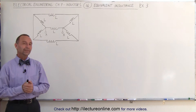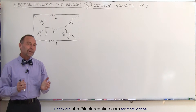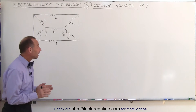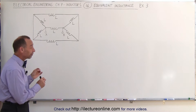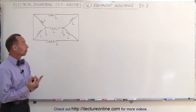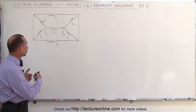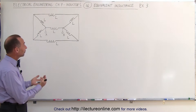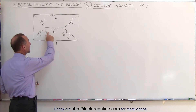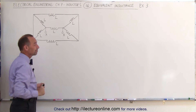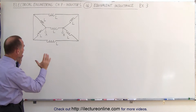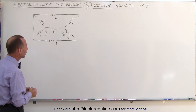Welcome to Electronline. Sometimes the circuits are drawn in such a way that it's very difficult to figure out what the equivalent circuit is. In this case, we're trying to find the equivalent inductance between A and B. So how do we take something like this and make sense out of it?